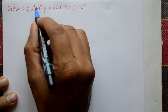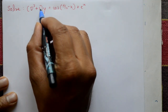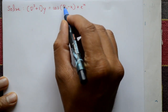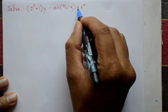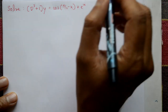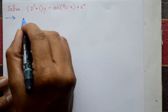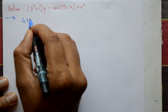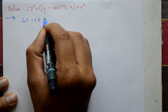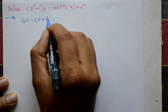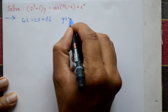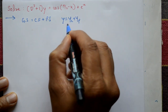Solve (D³ + 1)y = cos(90° - x) + eˣ. Find the general solution. The general solution is complementary function plus particular integral, that means y = yc + yp.